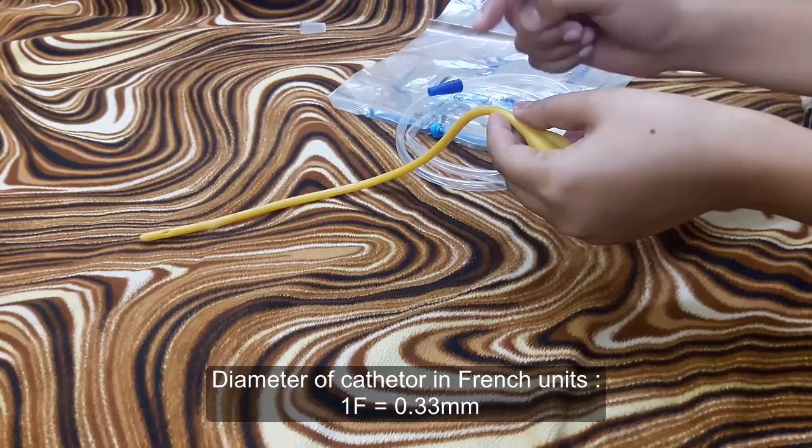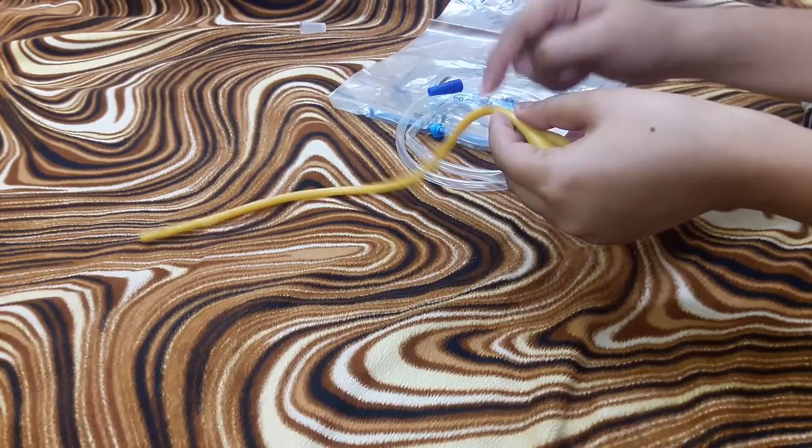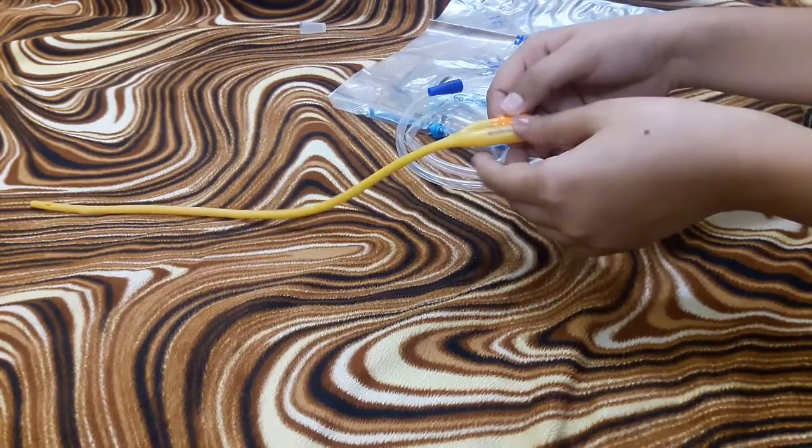The diameter will be one-third of the circumference, meaning 16 divided by 3mm will be the diameter of this catheter.